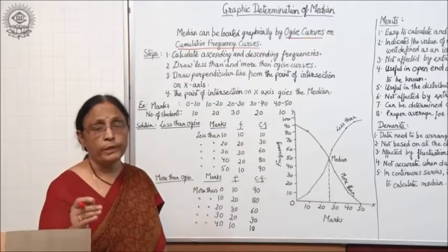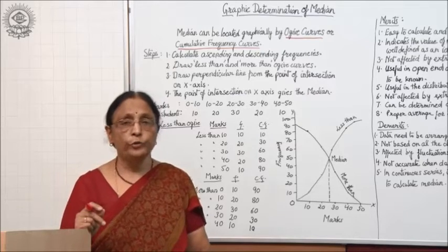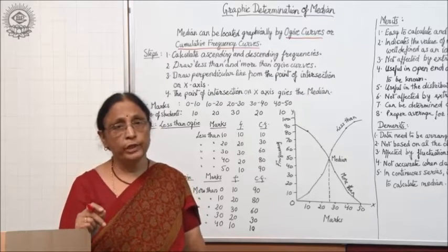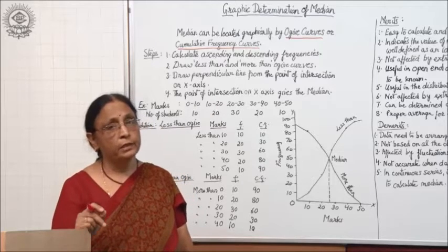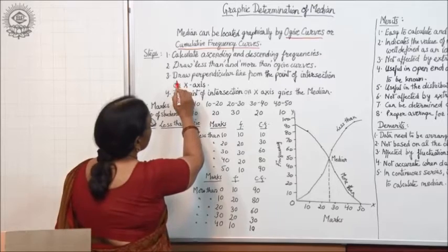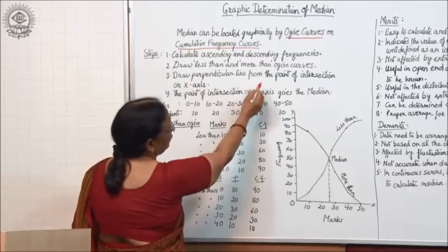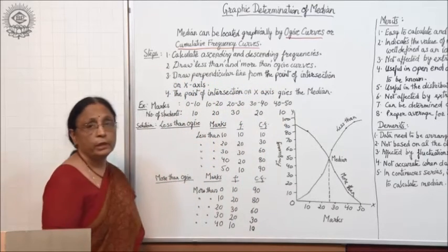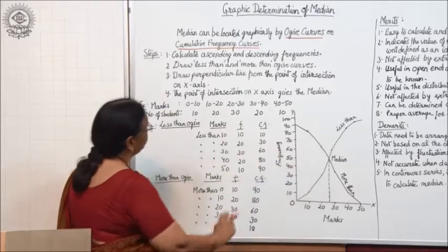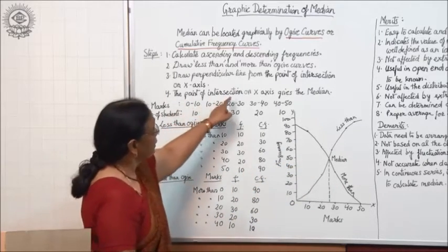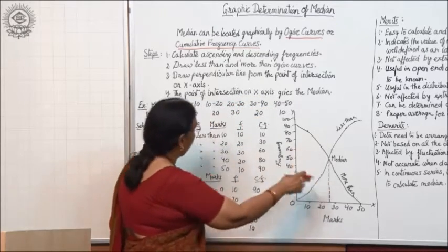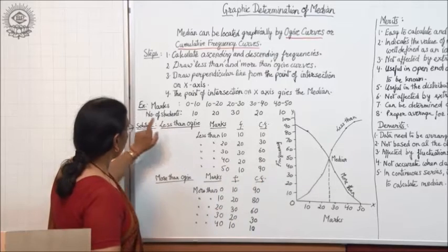After arranging the frequencies, you have to draw two curves — one is the less-than ogive and the second is the more-than ogive. The third step is to draw a perpendicular line from the point of intersection onto the x-axis. That point on the x-axis gives you the median.